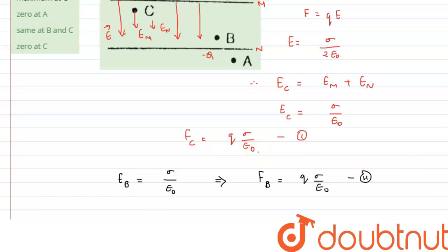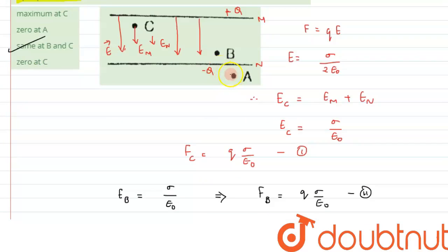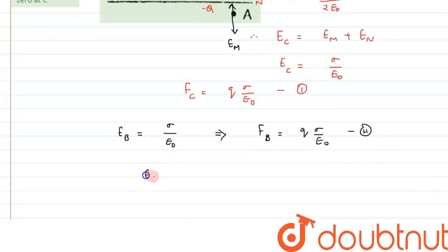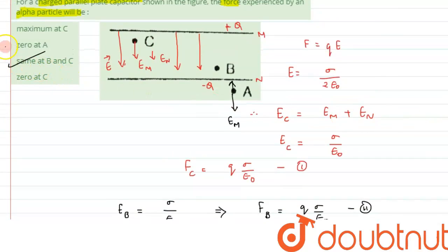Whether the particle is kept at B or C, it experiences the same force, so that option is correct. Now let's check point A. The electric field at A due to plate M will be in one direction, and due to plate N it will be in the opposite direction. So the net electric field at A will be zero, and therefore the force on the particle at A will be zero.